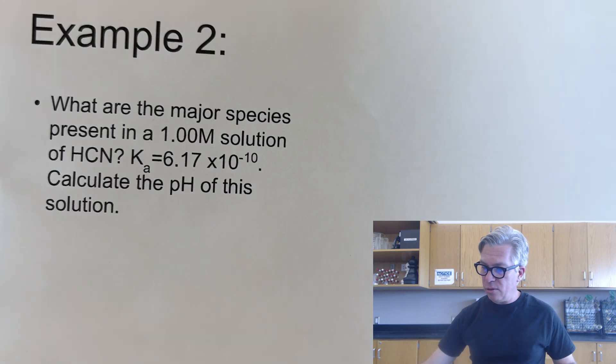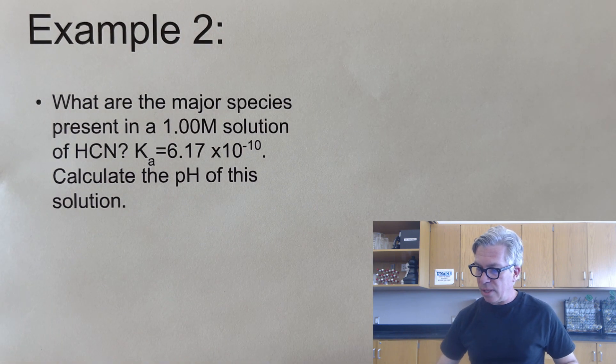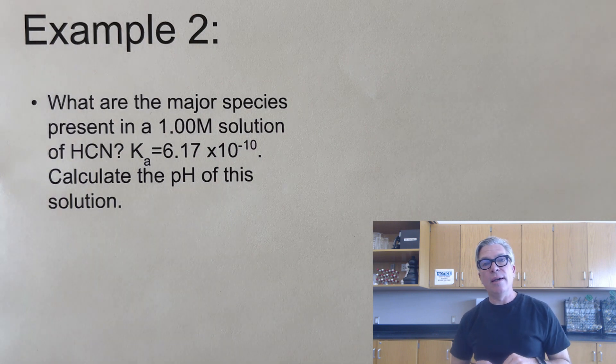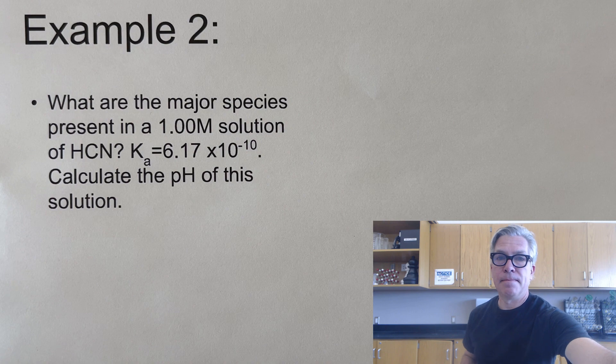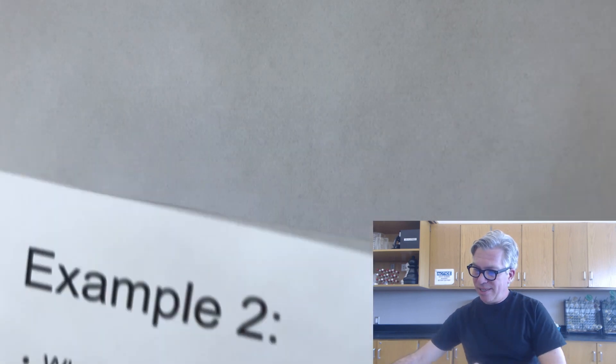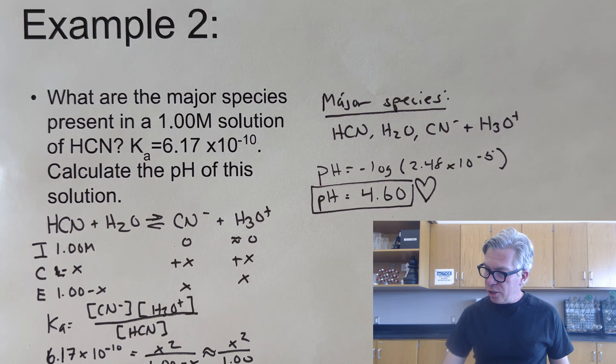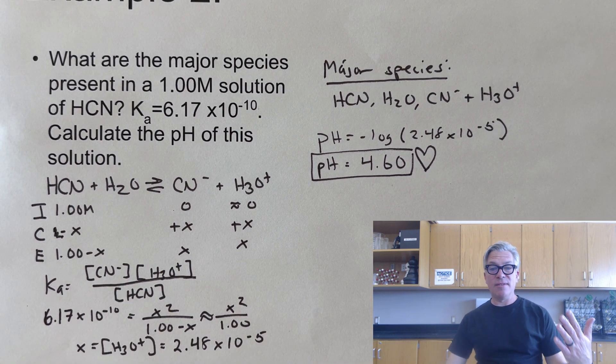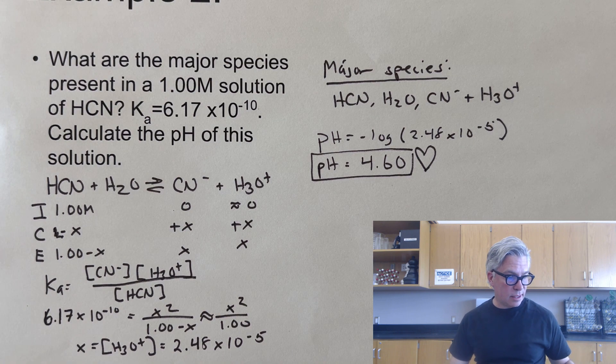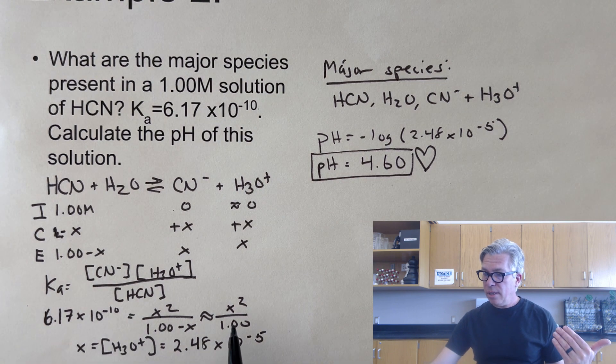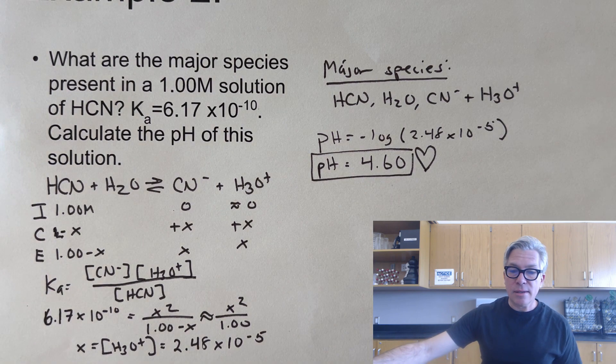And our first pause the video moment is for you to try a similar one. This is hydrocyanic acid HCN. What are the major species present? And calculate the pH of this solution. And when I did this one, I ended up with a pH of 4.6 because it's a higher pH, same kind of ice table, same setup, same plugging it in. My X turned out to be 2.48 times 10 to the minus 5, which is lower than the acetic acid, and that's because the Ka value is much smaller. So you're not going to get as many protons in the solution. But if you were able to get a pH of 4.60, then great, we're on track to do a really good job on this video.